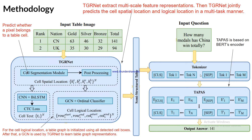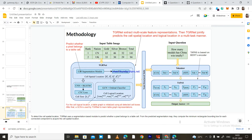Before question answering, some pre-processing is done using tokens such as CLS token, SEP token, and others. The question is converted into a number of tokens with respect to the table, and this combined input goes to the TAPAS module. TAPAS is a BERT-based encoder, and it helps output the answer corresponding to the given question. This was an overview, but this is a paper worth looking at in detail.